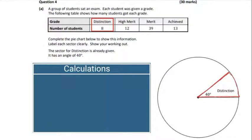Let's do the calculations. We have one already completed within the question. You can see there that 8 is the first category. If we put 8 over the total number of students, when we sum them all together we will get 72. Then if you multiply that by the total of 360 degrees, you will get the proportional sector, which would be 40 degrees. We're going to carry on with this process now for the high merit, the merit, and the achieved categories.